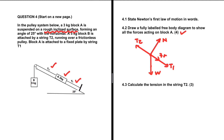For 4.3, we want the tension in string T2. T2 acts on both the 3 kg block and the 5 kg block. Let's see if we can use the 3 kg block to find T2. The system is in equilibrium — the 3 kg block is kept at rest by T1. We could say T2 equals the frictional force plus T1, but we have too many unknown variables, so we can't use the 3 kg block here.